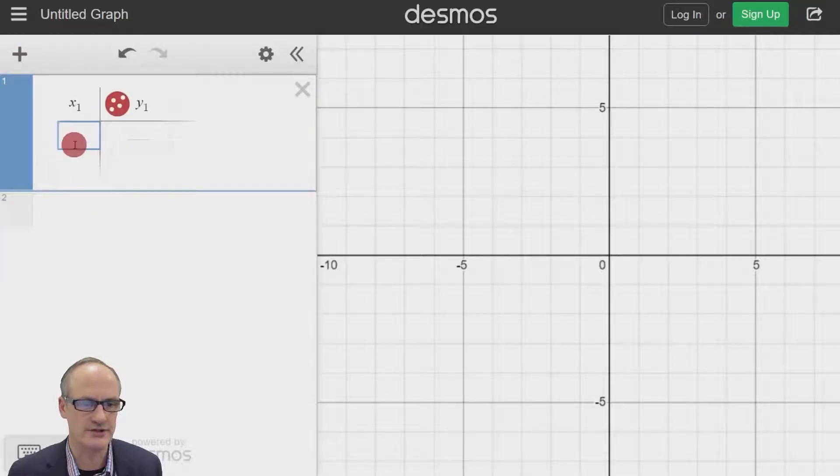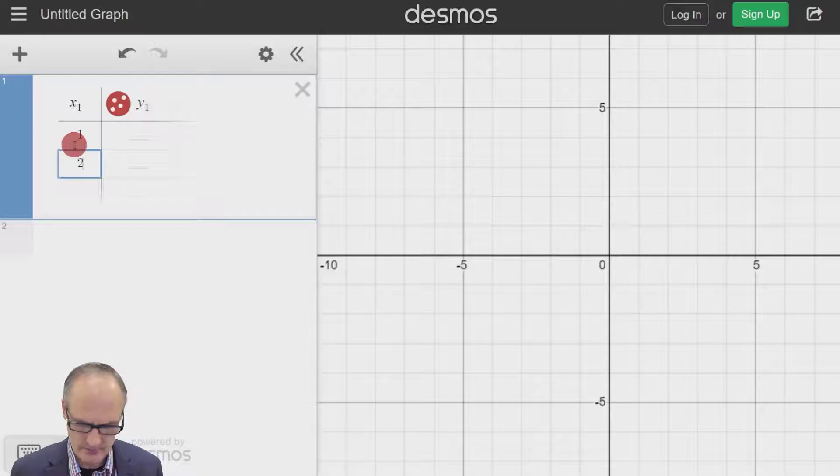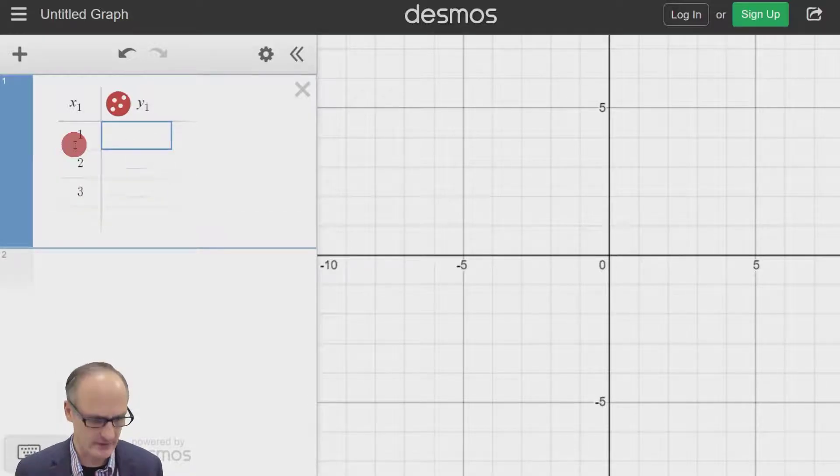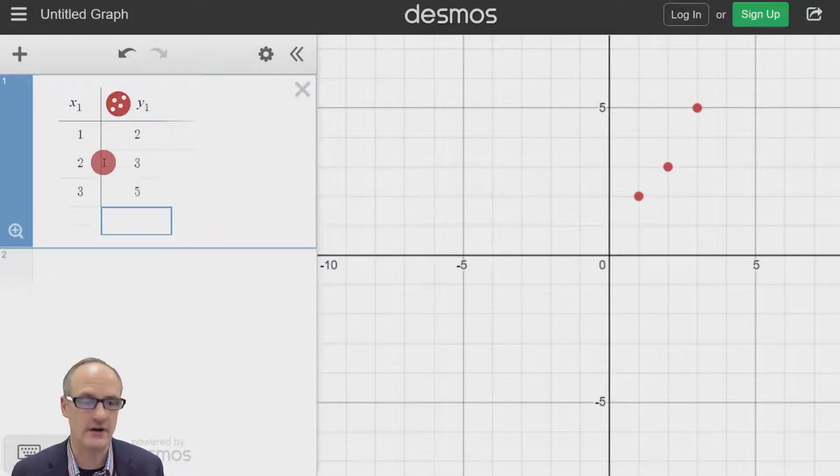First thing we need to do is put some points in. Let's put some points in our table. We've got one, make that two, make that three. And then we're going to say let's make it two, make this three and five.